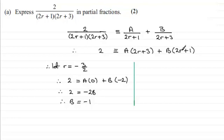So I'll just say here, let r equal -1/2. And therefore what we've got here is still the 2. And it equals A times, 2 times -1/2 is -1, plus the 3 is going to be 2.